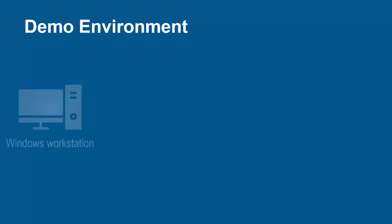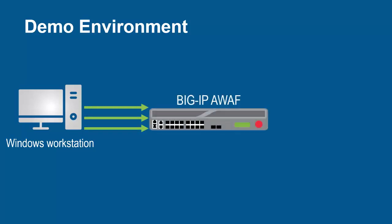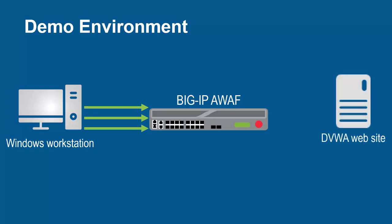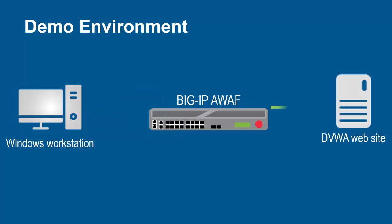The environment for this demo contains three devices. A Windows Workstation will be used for sending requests to build the security policy. These requests will arrive at the F5 BigIP System running Advanced WAF. The BigIP System sits in front of the backend web application and, using its full proxy architecture, examines every request before sending them to the backend web server.